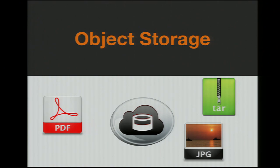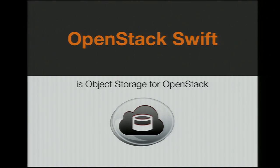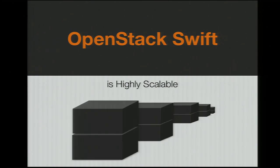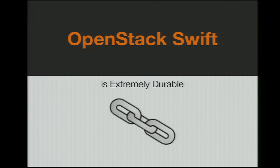So where does Swift fit in? Swift is an object storage system. It takes unstructured data and stores it very cheaply and reliably and at very high concurrency. Swift is highly scalable in a couple of different ways. You can continually add backend storage to Swift and it will continue to grow. And you can continually expand the front-end piece of Swift to meet your data concurrency requirements.